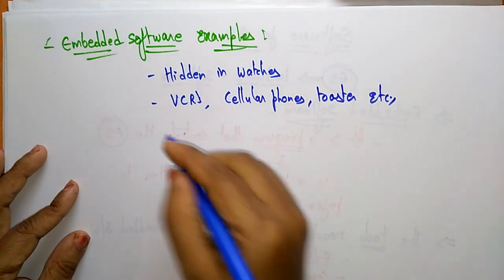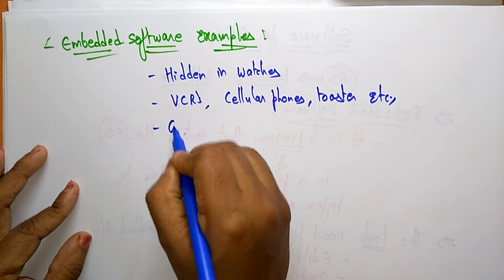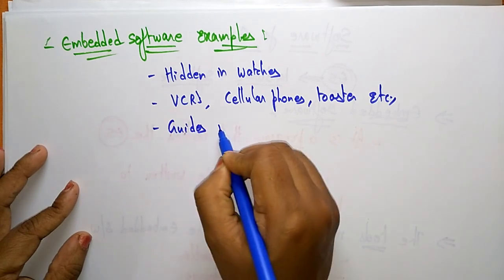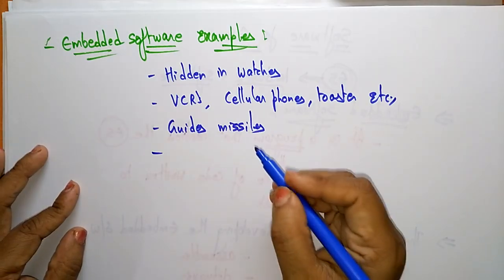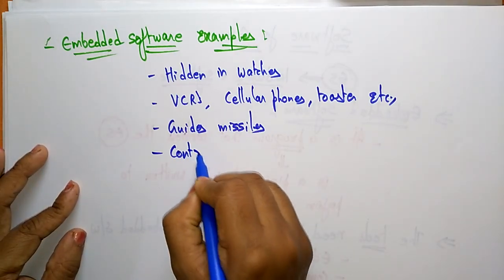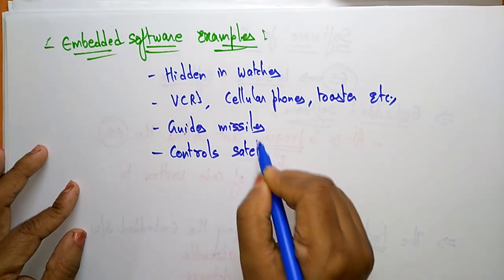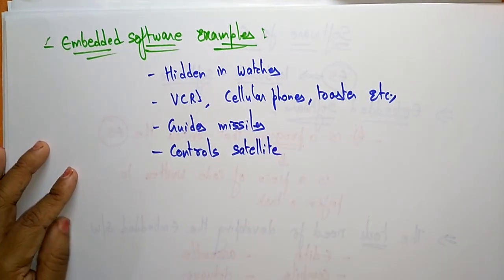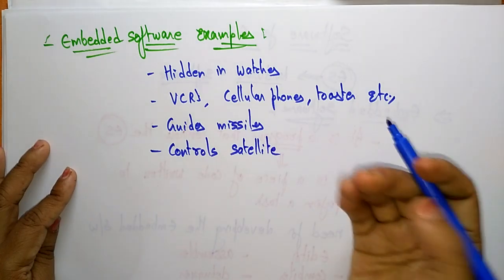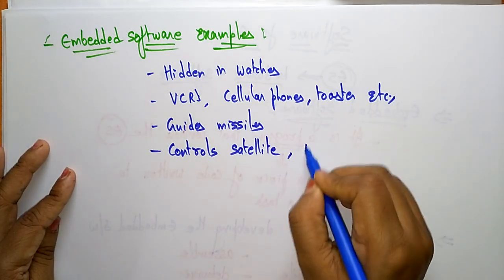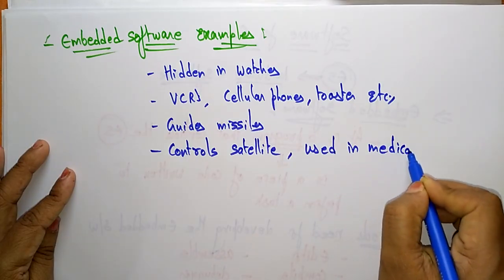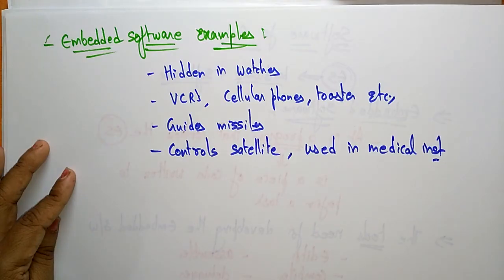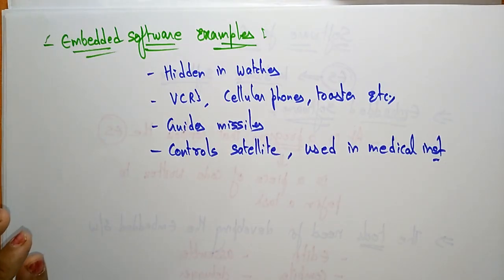Whatever toasters you are using, those toasters also have the embedded system, which is a chip designed with hardware as well as software. And it guides missiles. It controls satellites. So this embedded software is designed to control satellites and is also used in medical instruments.